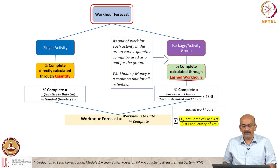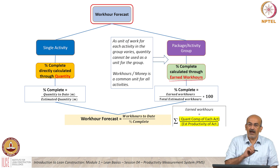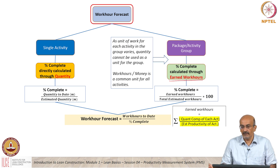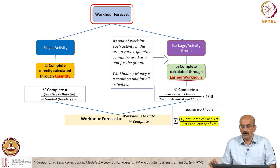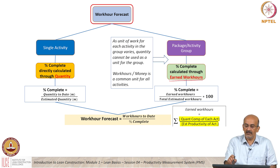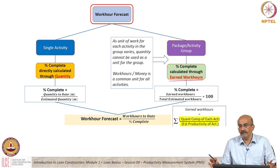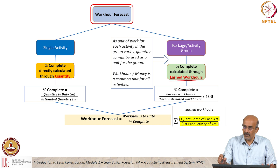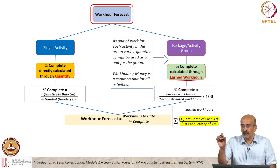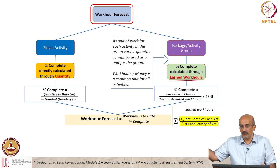If it is a group of activities, you cannot calculate percentage complete by just adding up quantities because the units are different. As the unit of work for each activity is different, the quantity cannot be used. The common unit for all activities is work hours or money. So we come into the concept of earned work hours — it could be earned money or earned cost in that form. Here we multiply by the work hours, but it could be cost into the same factor.